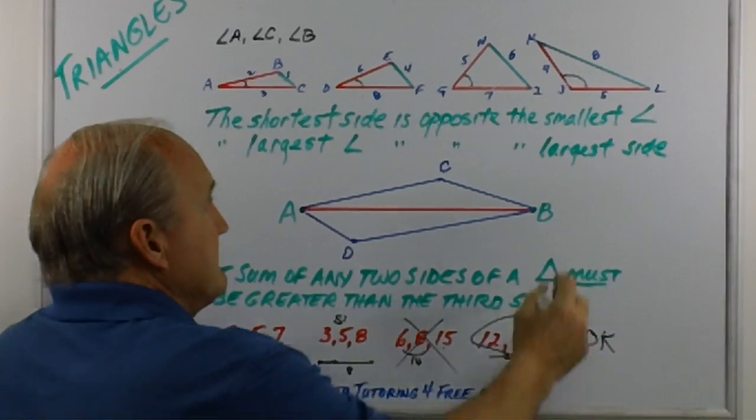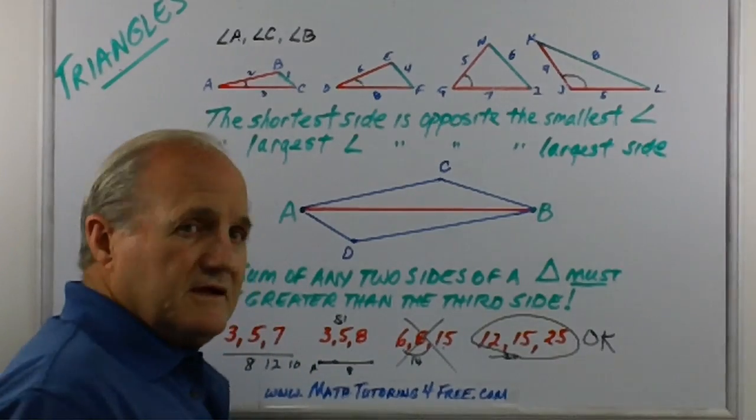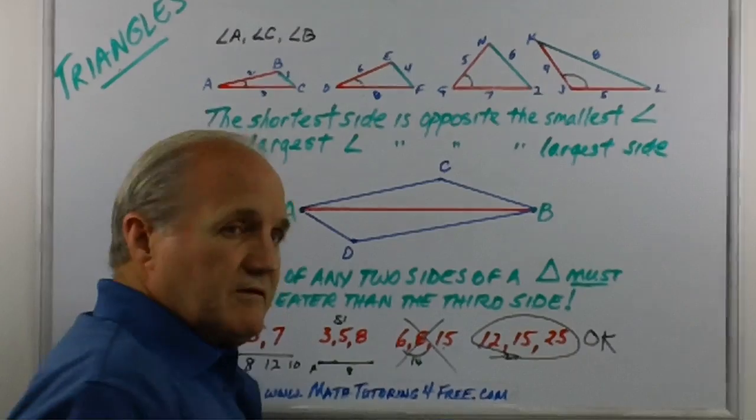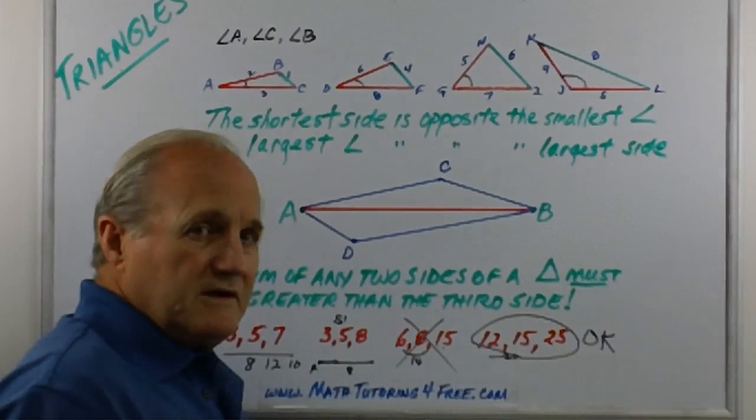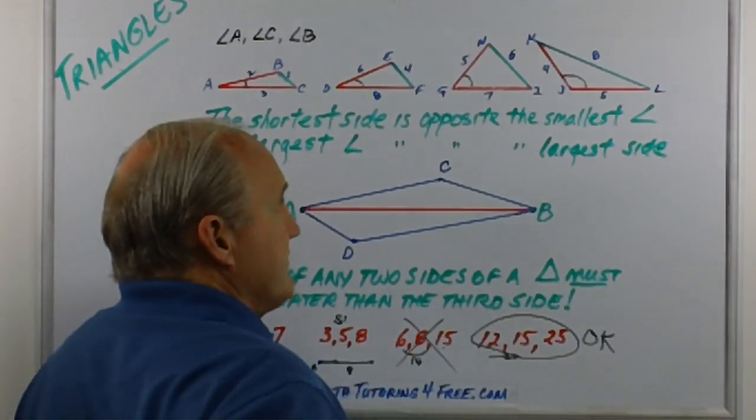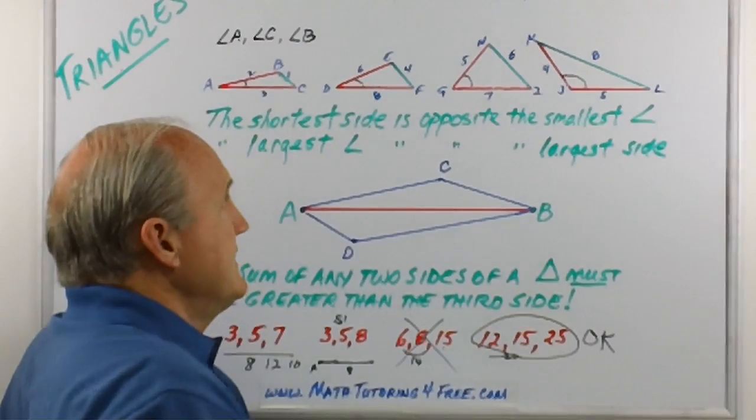Let's go back up to this one. 4 plus 5 is 9, 9 is greater than 8, so that works. 5 plus 8 is 13, that's greater than 4. And finally, 8 and 4 is 12, that's greater than 5, so that is a valid triangle.